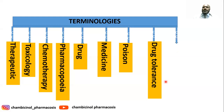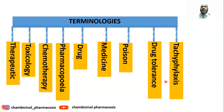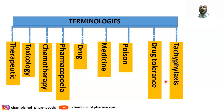We also have tachyphylaxis, which is a rapid diminished response to successive doses of a drug. A particular dose that was previously causing a therapeutic benefit will reach a point where the same dose no longer responds. This is very common especially for drugs acting on the CNS, including morphine as an opioid analgesic.